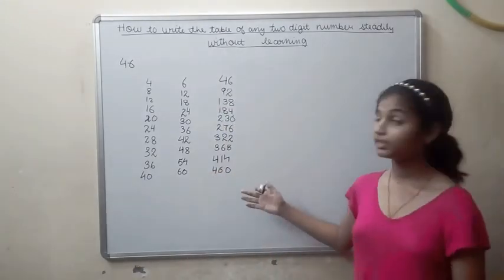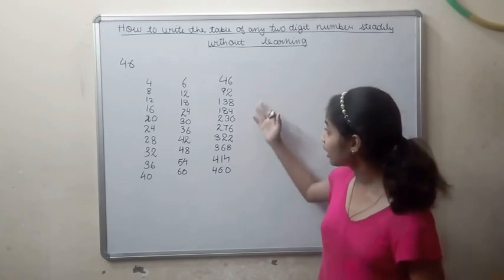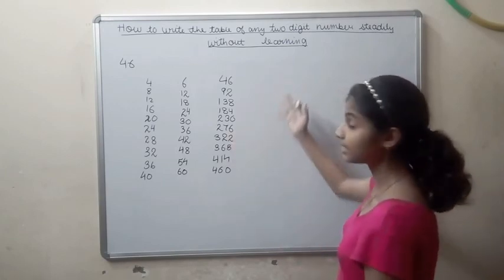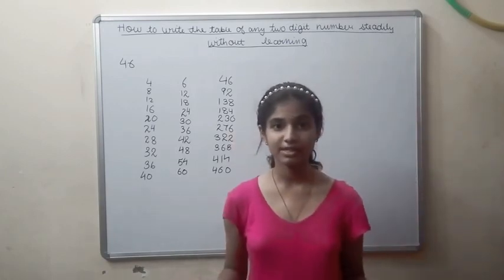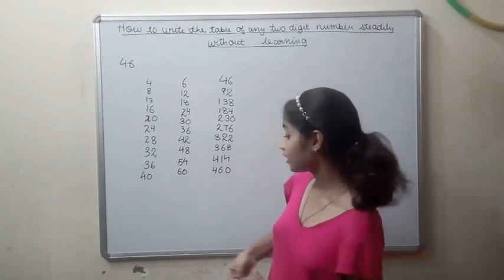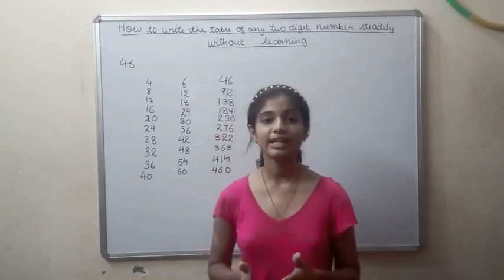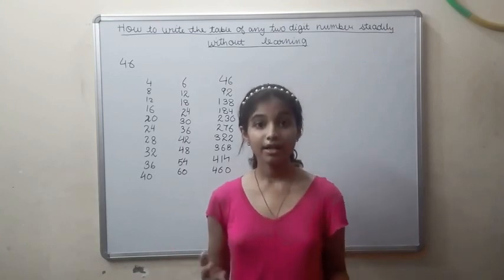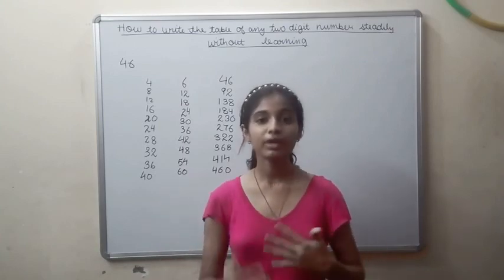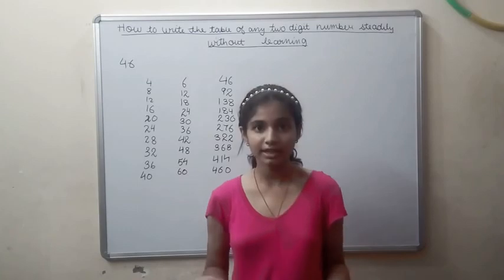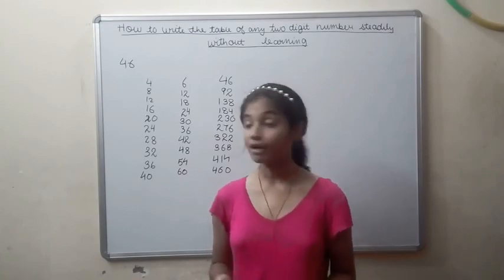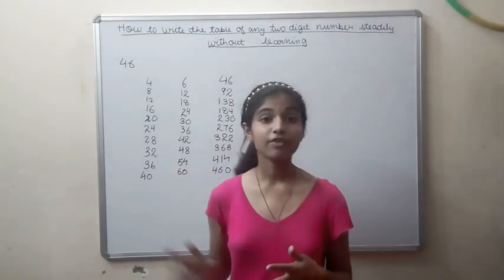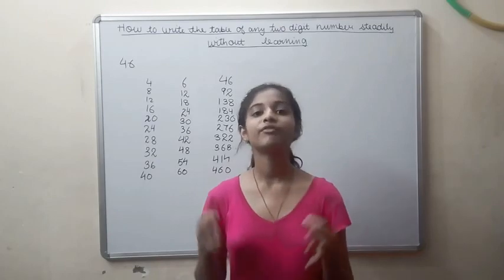So again, we have got the table of 46. So now, by this method, you can see that we have taken out all the tables. So now, you can see that all the tables will be very easy for you and all the two-digit tables we will write easily. And if you practice this method more and more, you can even tell them only by yourselves. And if you have learned these all tables from 1 to 9, you will do it very easily.